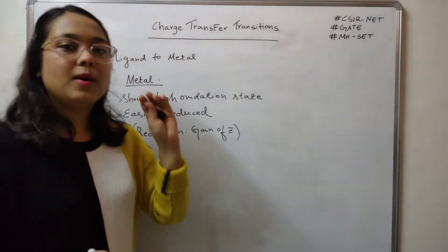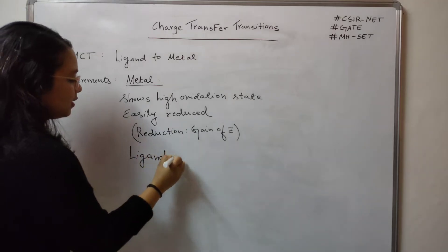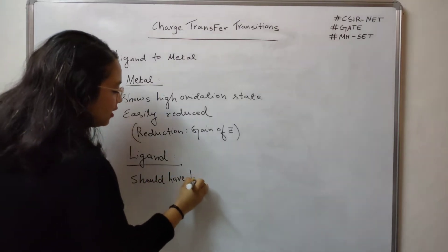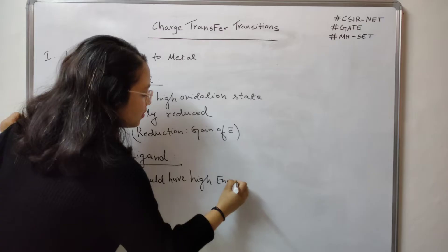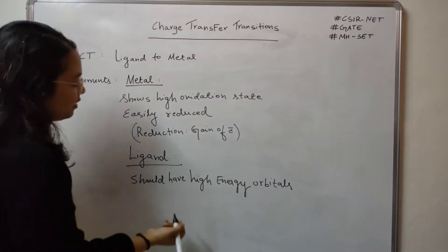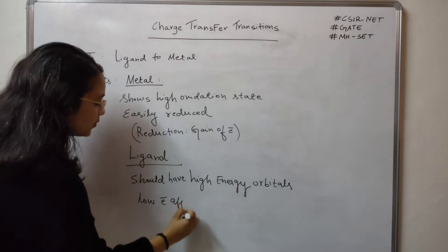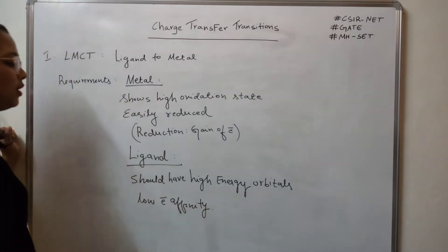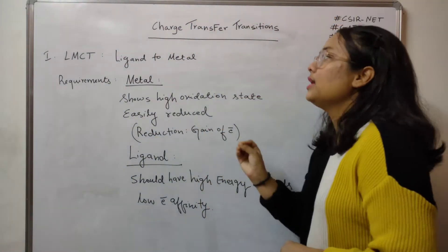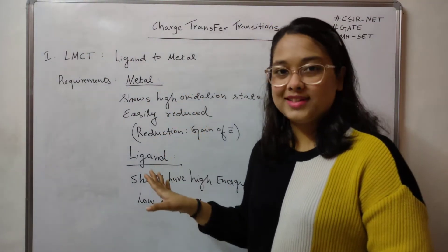Now let us look at the requirements with respect to the ligand. First, the ligand should have high energy orbitals. The second requirement is that the ligand should have low electron affinity. These are all the requirements needed for a particular complex to show LMCT.